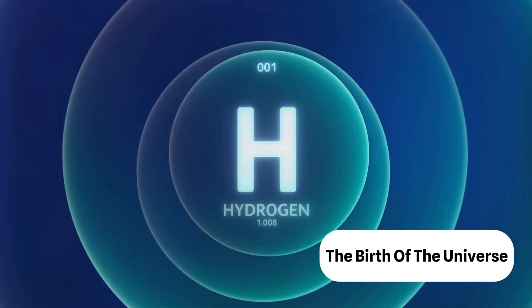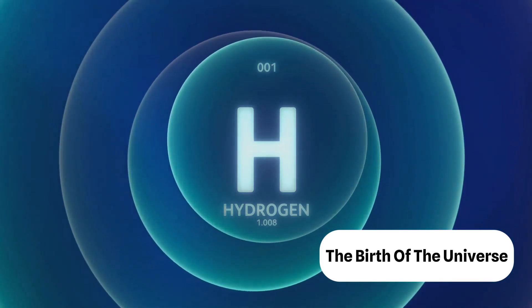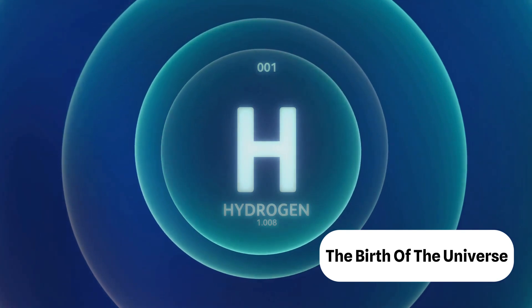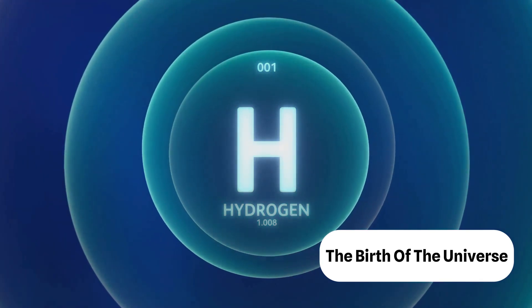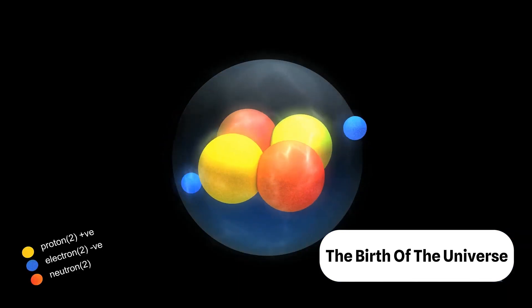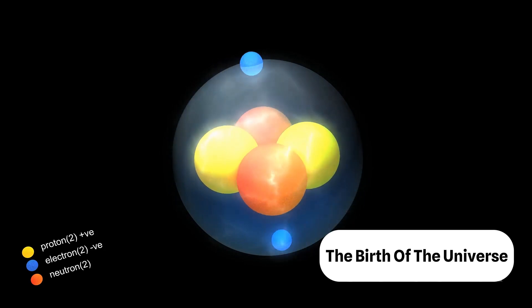As the universe expanded, it also cooled down. This cooling allowed quarks, the smallest known particles, to combine and form protons and neutrons. These in turn formed the nuclei of the lightest elements, hydrogen and helium. This process known as nucleosynthesis happened in the first three minutes following the Big Bang.